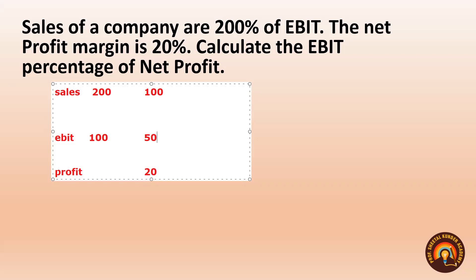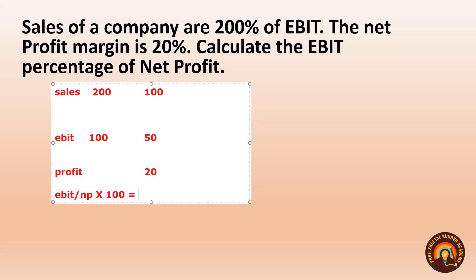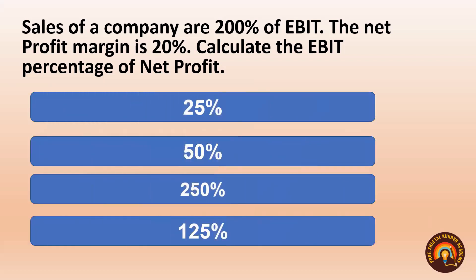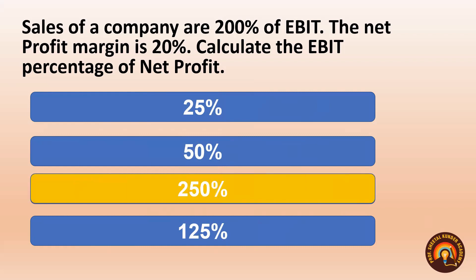Now we need to calculate EBIT as a percentage of net profit: EBIT = 50, Net profit = 20. So (50 ÷ 20) × 100 = 250%. Options are 25%, 50%, 250%, 125%. We computed 250%, so the correct answer is 250%.